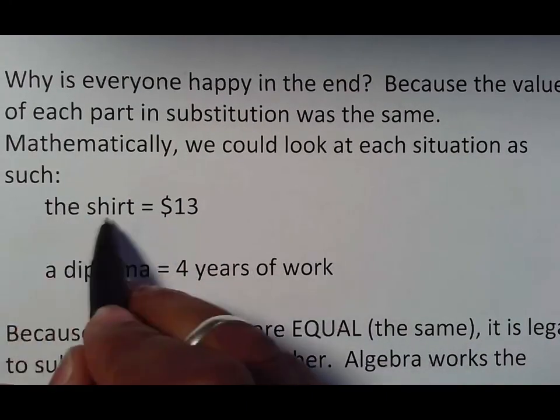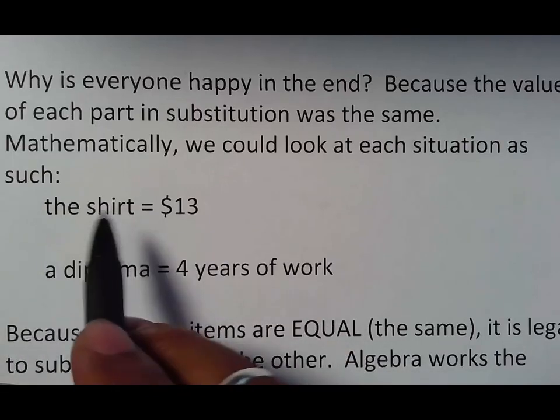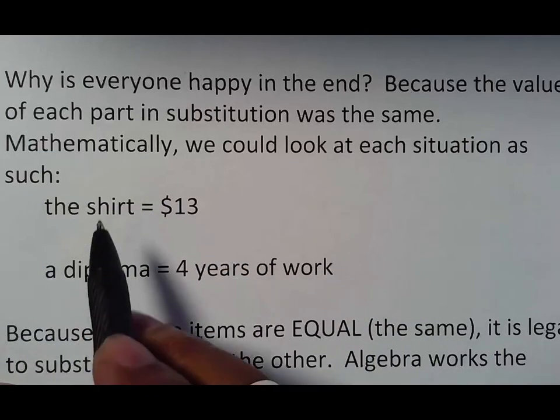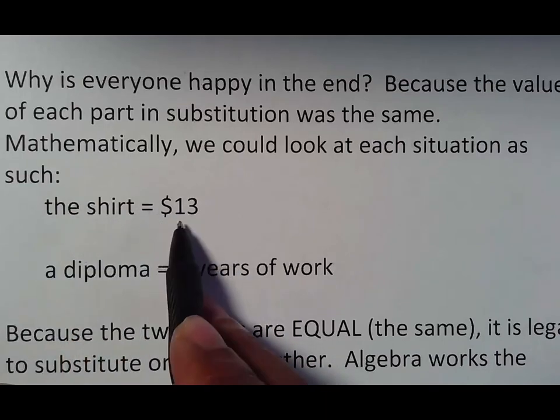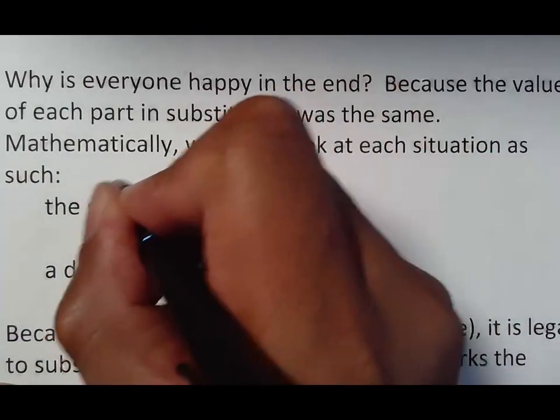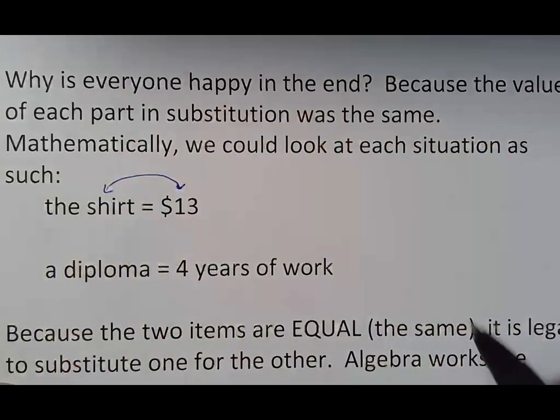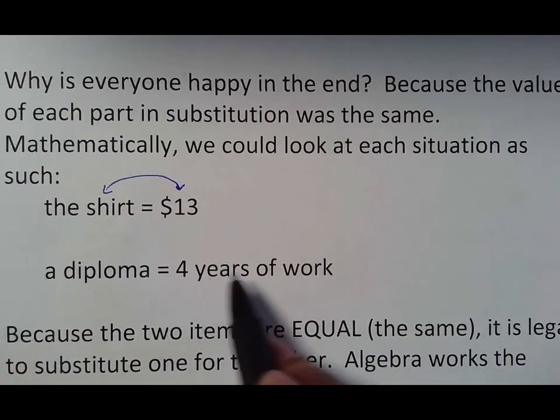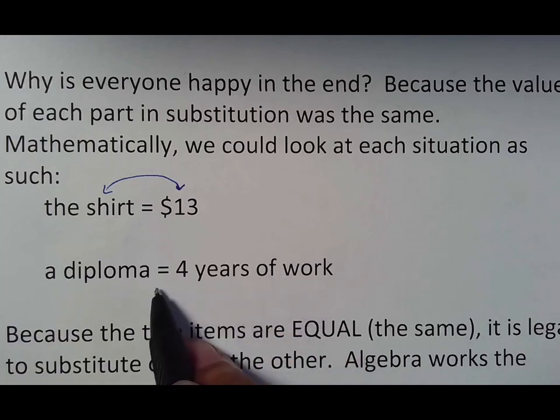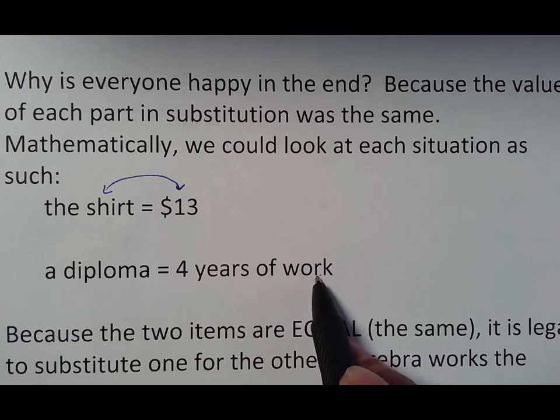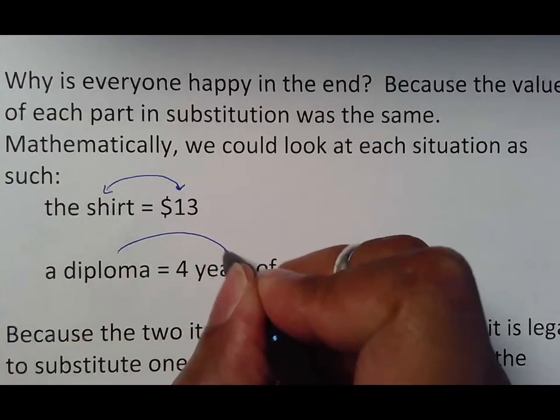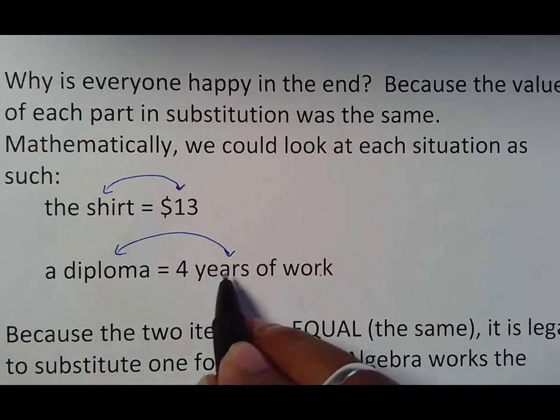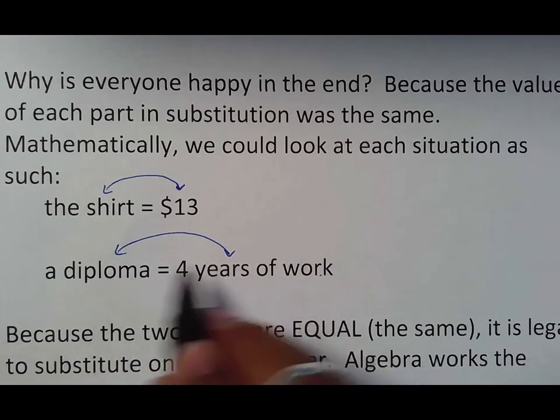Mathematically, you could look at it like this. The shirt equals $13. Because the shirt is $13, and you'll eventually find out that equals means is, these two things are equal in value. So as long as you trade for things that are equal in value, nobody complains. A diploma is equivalent to four years of hard work. And so therefore, when you trade your four years of work for a diploma and the diploma is traded for four years of hard work, everyone is happy because these two things are equal in value.